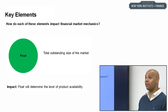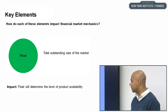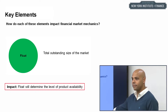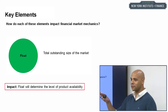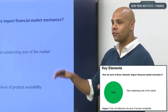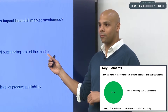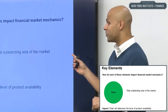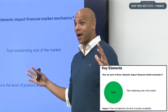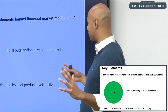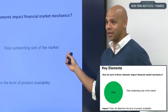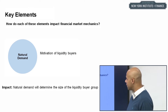The next element is float — the total outstanding size of the market, meaning how much of the thing is out there that you want to trade. Float determines the level of product availability. Here's an example of crowd size and float not matching up: try buying a two-bedroom apartment on the Upper West Side. There's a huge crowd of people who want to buy, but the total outstanding float in that market isn't big enough.